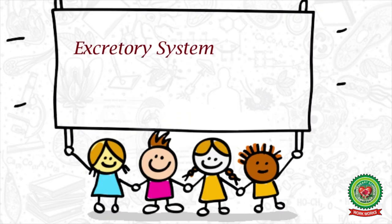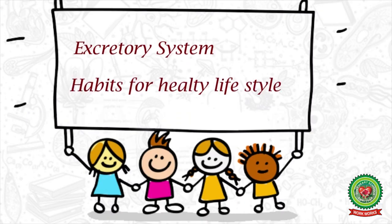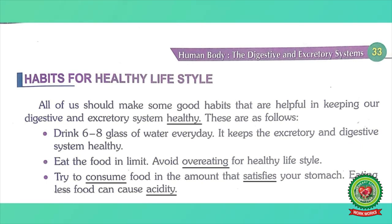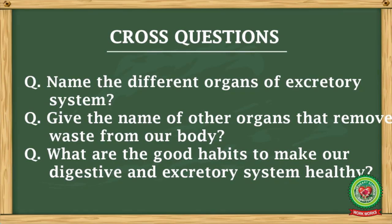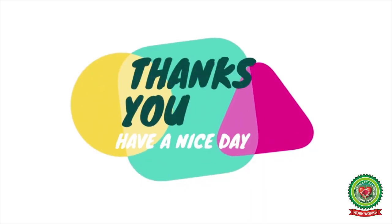In today's class, I have discussed two main topics: the excretory system and habits for a healthy lifestyle. In this chapter, we have covered the digestive system of humans, importance of proper chewing, importance of regular bowel movement, the excretory system, and healthy habits for a healthy lifestyle. Read and revise the full chapter thoroughly, and also revise the cross questions. Thank you and have a nice day.